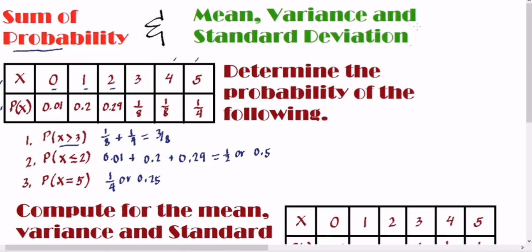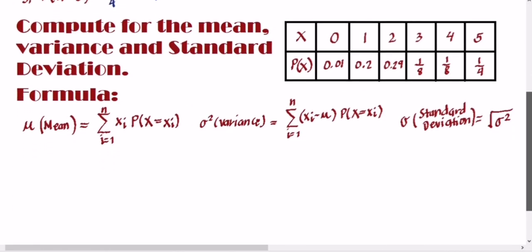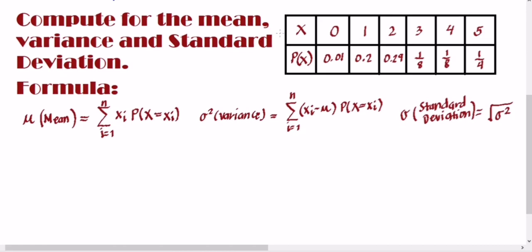We'll use the same table with x and P(x). The random variable x is 0, 1, 2, 3, 4, 5. The formula for the mean is: summation of x sub i times P(x sub i), where i equals 1 to n. What we're doing is getting the sum of the products of each x value multiplied by its corresponding probability.